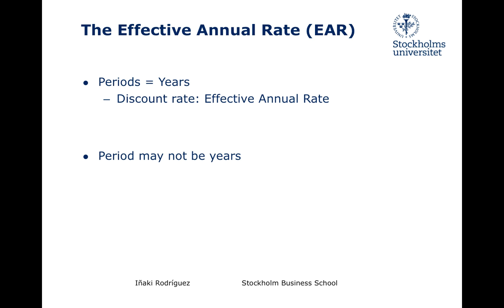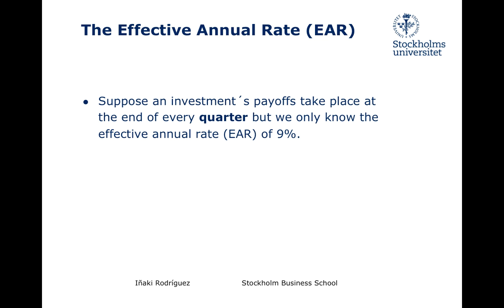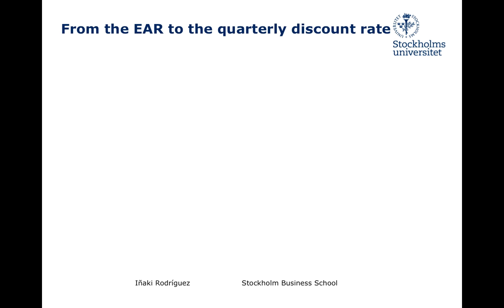However, periods may obviously have a length shorter than one year — for example, they can be equal to one month, one quarter, or six months. In that case, if we have the Effective Annual Rate, we cannot use it directly to discount such payoffs. The good news is that we can find the appropriate rate following a simple procedure. Suppose we are in front of an investment whose payoffs occur in periods of three months, and the Effective Annual Rate is equal to 9%. How do we find the discount rate needed to find the present value of payoffs that take place at the end of each quarter — that is, each three-month period? In other words, how do we turn the Effective Annual Rate into its equivalent quarterly discount rate?